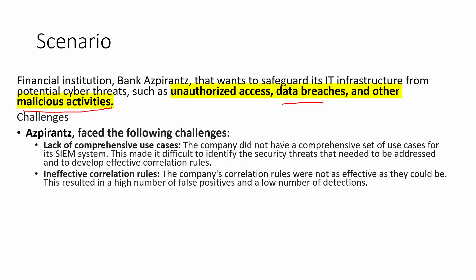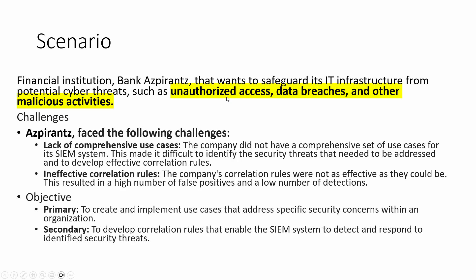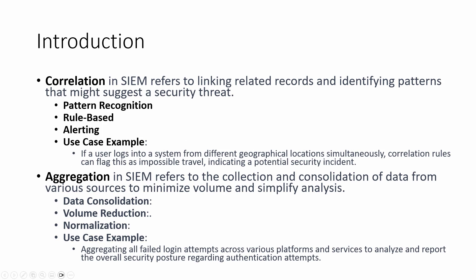In this scenario, Aspirant Bank faces threats like unauthorized access, data breaches, and other malicious activity. The challenges they face are: first, a lack of comprehensive use cases — the company did not have a complete set of use cases for the SIEM system, making it difficult to identify security threats; and second, ineffective correlation rules, which prevented them from properly correlating events. To overcome these challenges, the objectives are to create and implement use cases addressing specific security concerns, and to develop correlation rules enabling the SIEM to detect and respond to security threats.